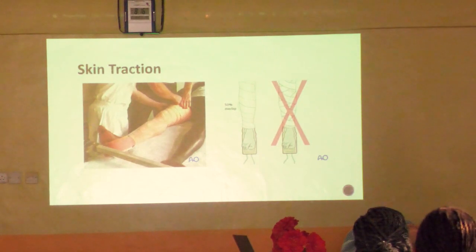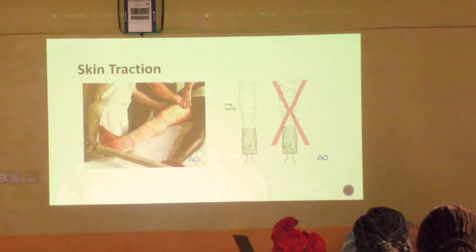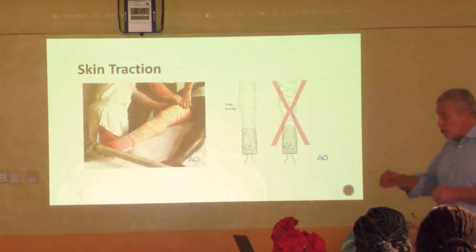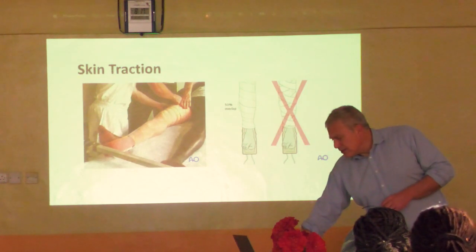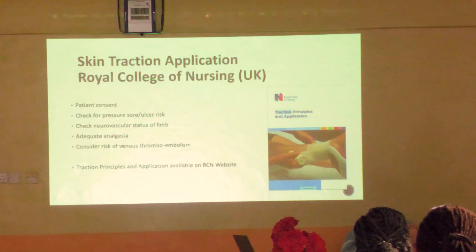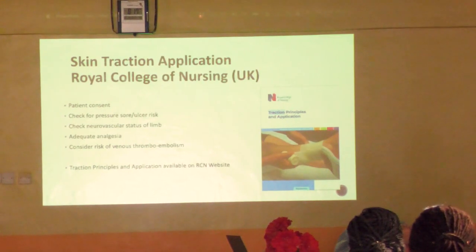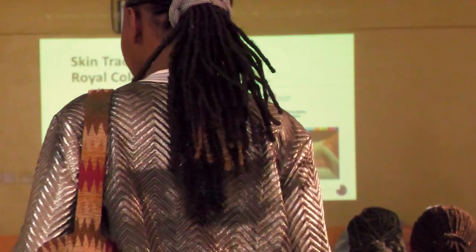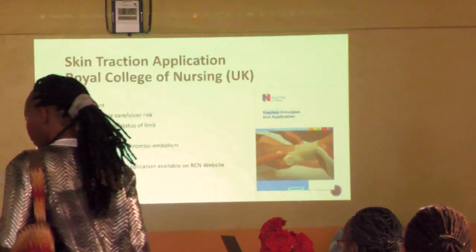I looked up the Royal College of Nursing website, which has an enormous document about principles of traction. Key points: make sure the patient is aware of what you're doing; do a pressure sore risk assessment; check the limb has a pulse and there's no neurological injury before applying - because you'll feel very silly if you apply traction and then notice a foot drop that was pre-existing.